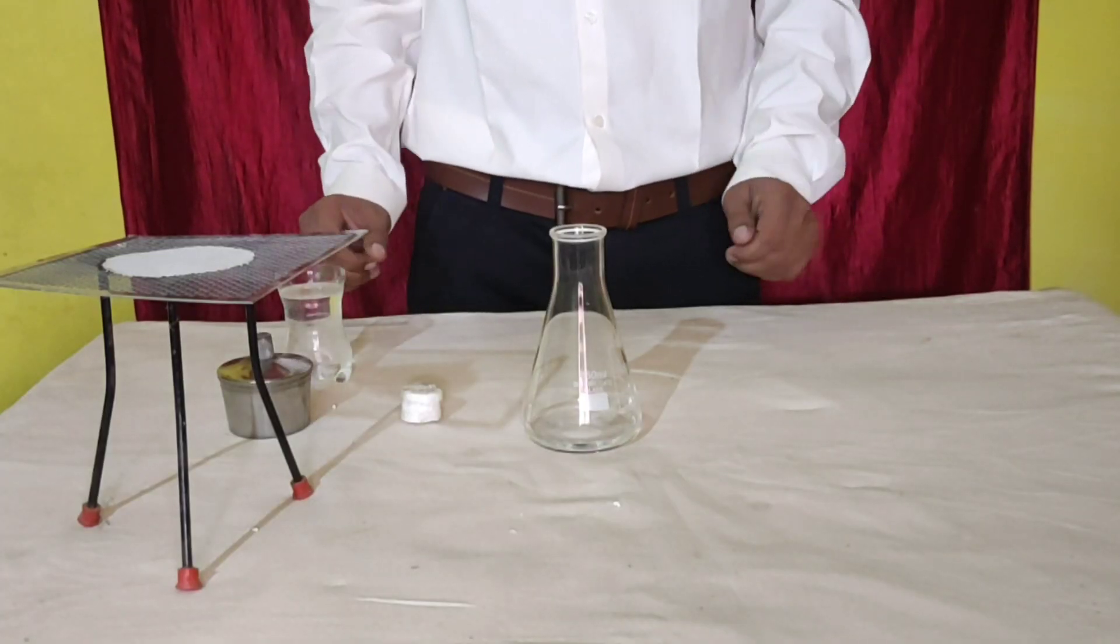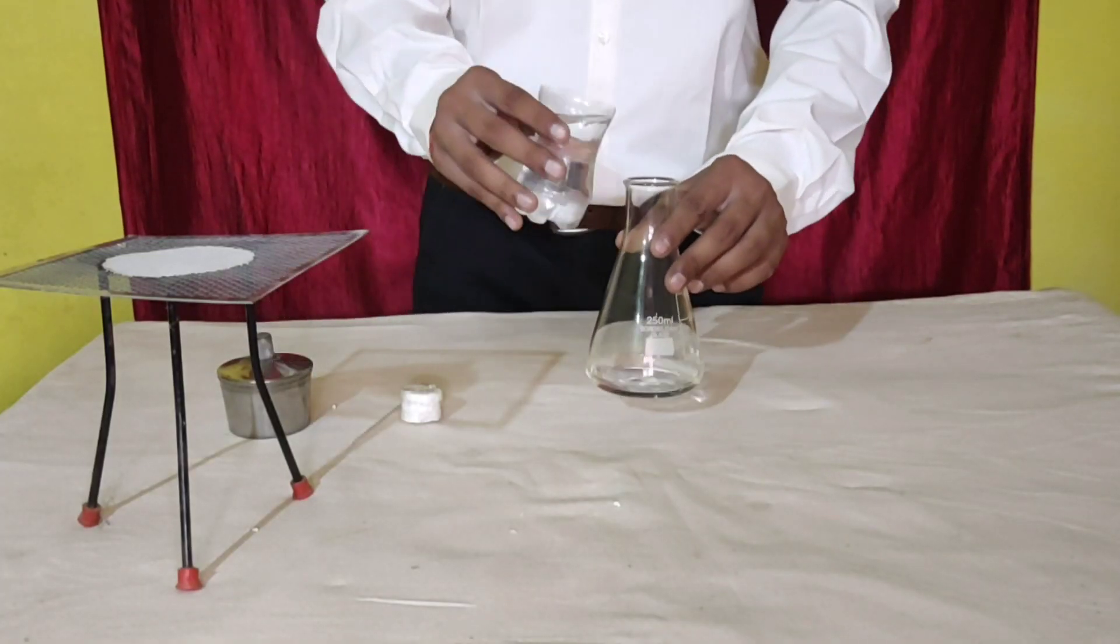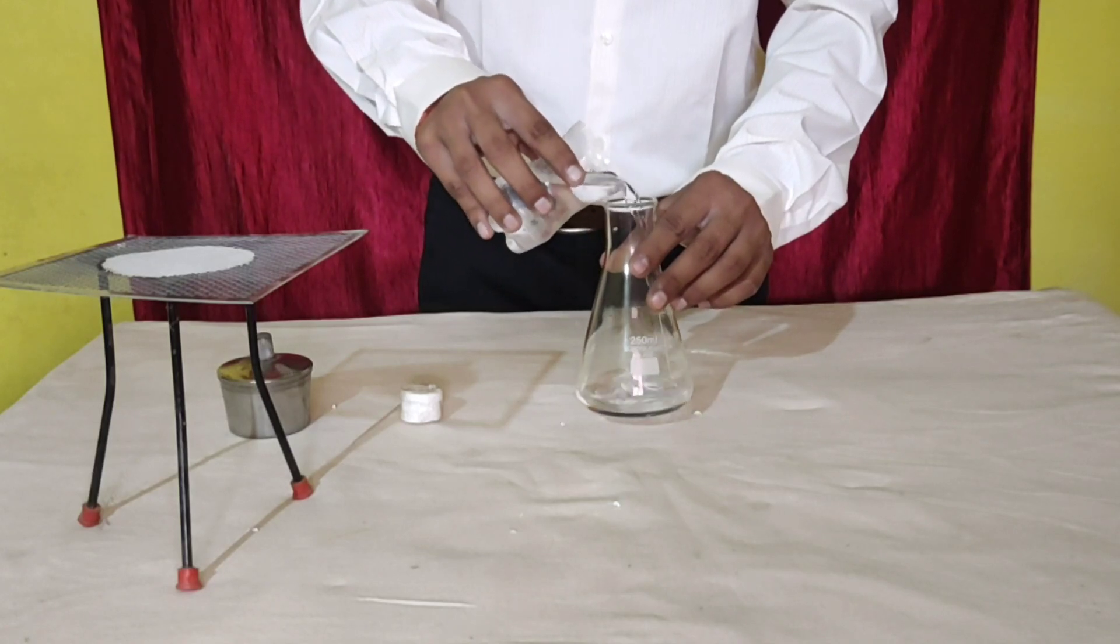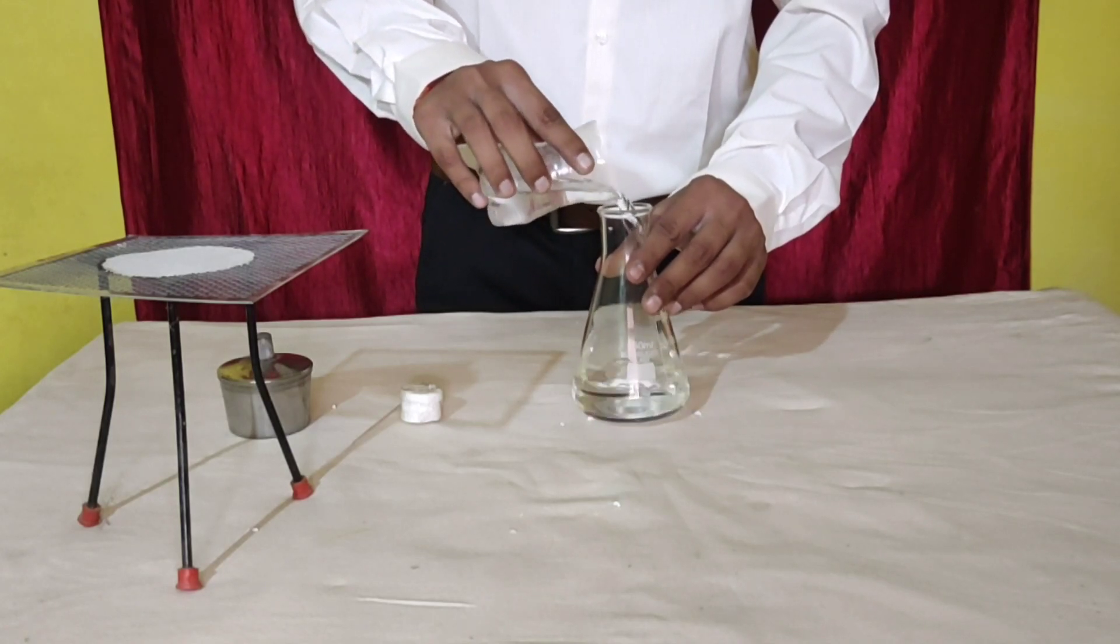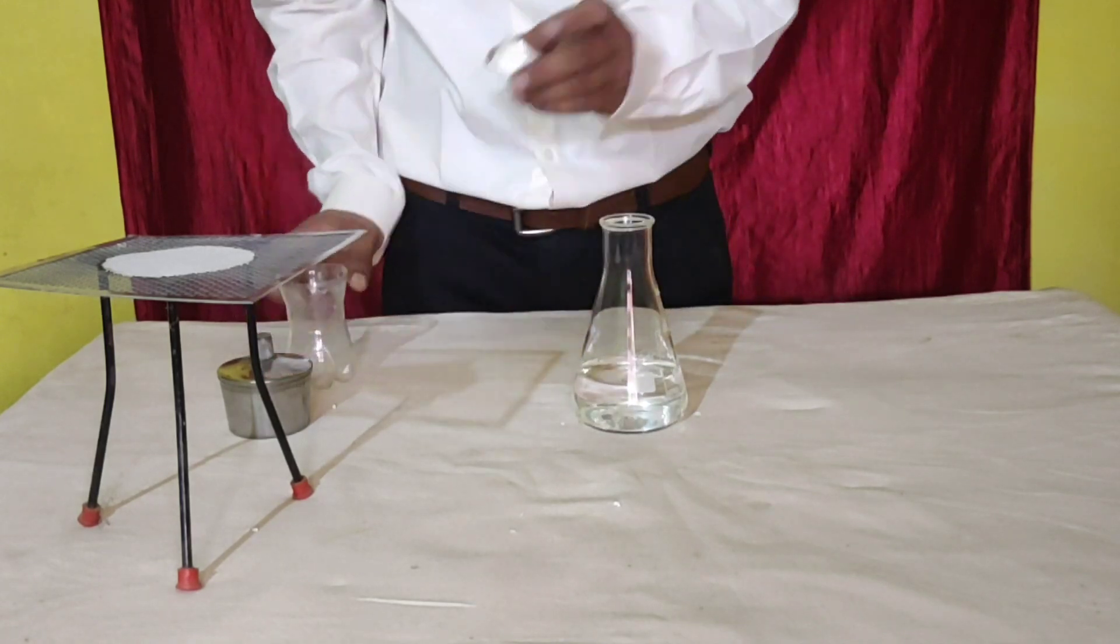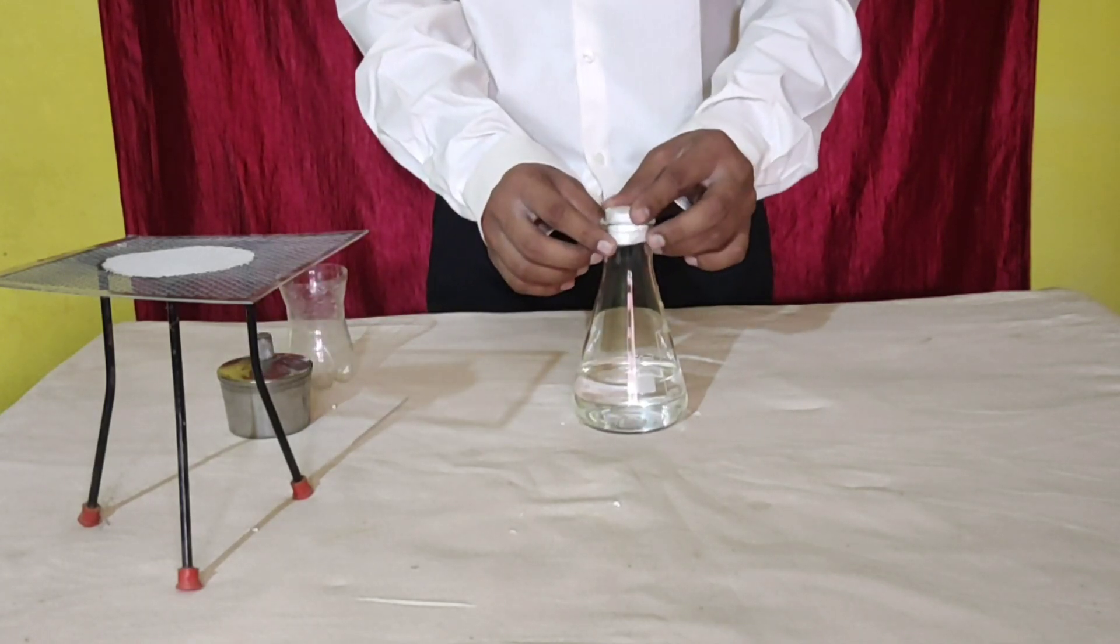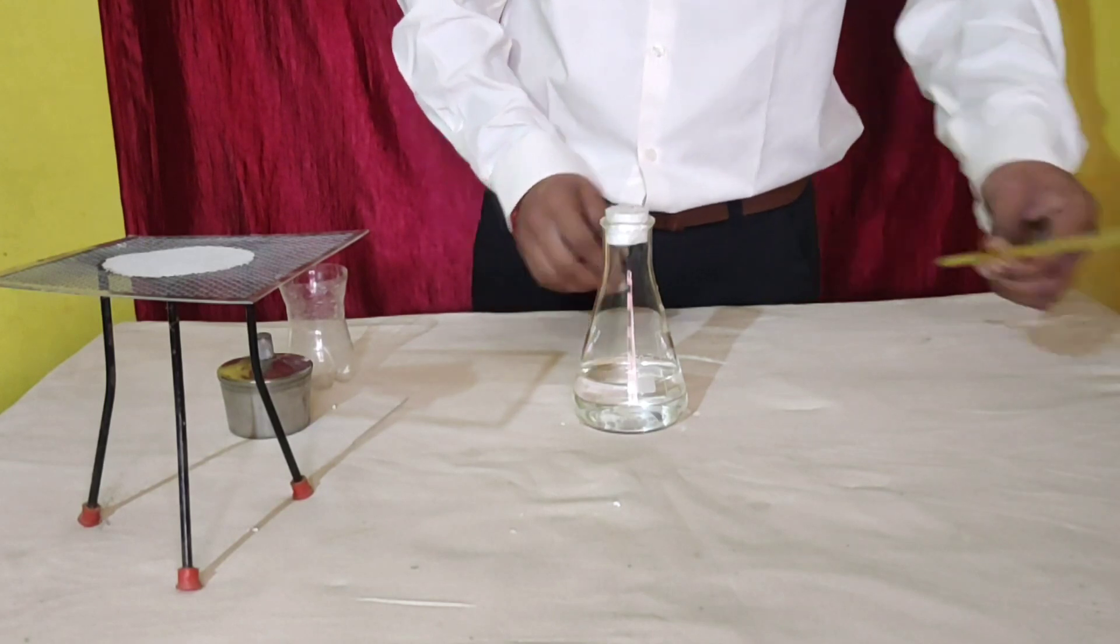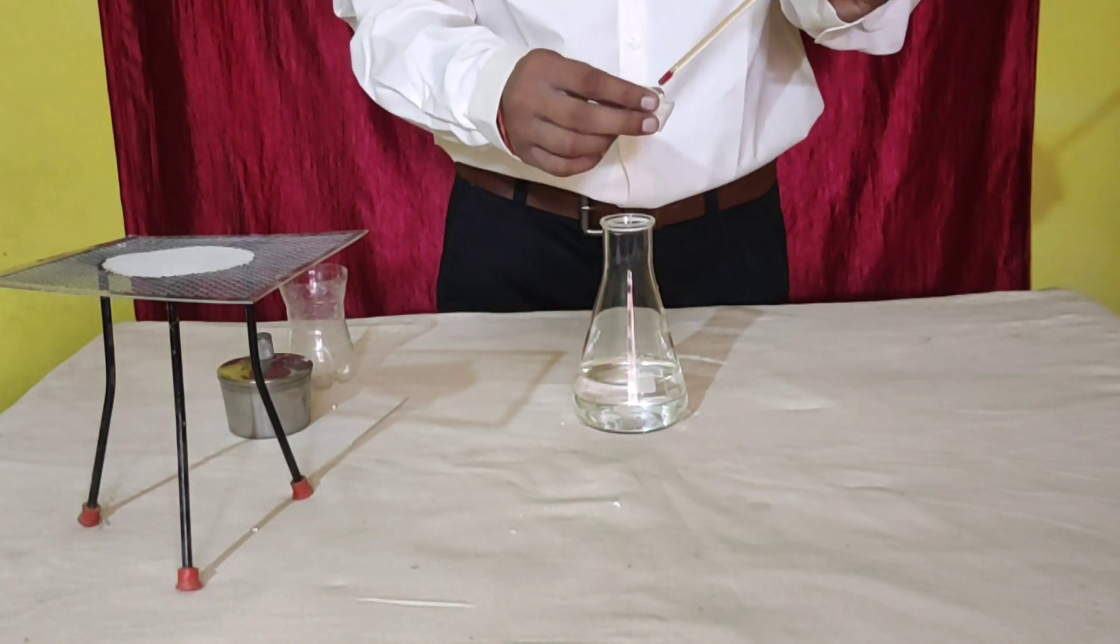About 150 ml of water is taken in the conical flask, and its mouth is closed with a two-holed stopper. Now, fix the thermometer through one of the holes in the cork.